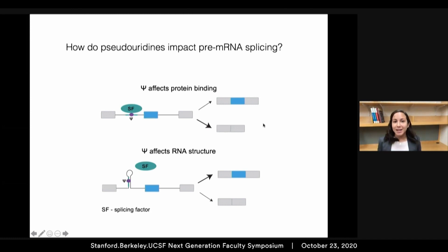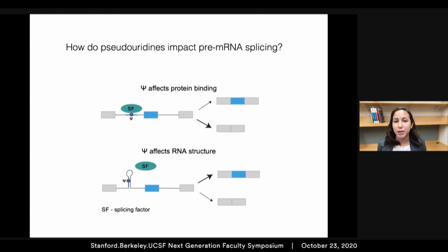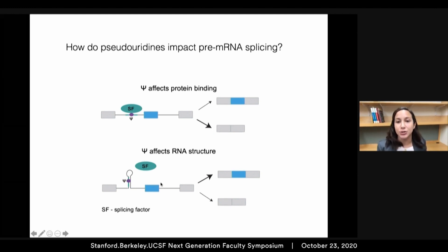Next I wanted to know how individual pseudouridines affect splicing. Pseudouridines might influence splicing by altering the affinity of a splicing factor for its binding site in the pre-messenger RNA sequence. Alternatively, a pseudouridine might stabilize RNA secondary structure to occlude the binding site of a splicing factor in the pre-messenger RNA. Either of these mechanisms could result in differences in splicing choices.